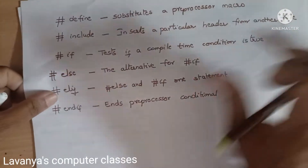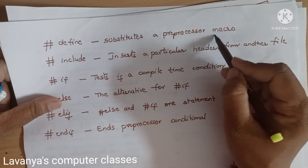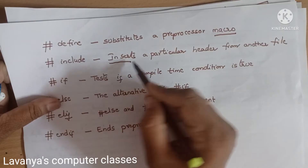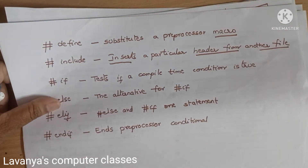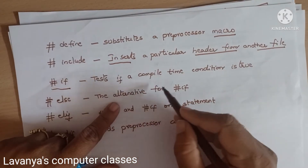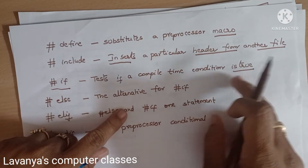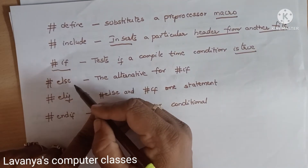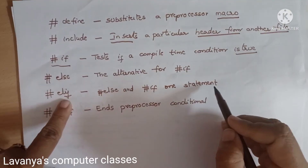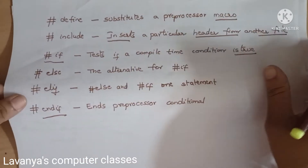There are more pre-processor directives besides hash-include. Hash-define substitutes a preprocessor macro. Hash-include inserts a particular header file from another file. Hash-if tests if a compile-time condition is true. Hash-elif and hash-else provide alternative conditions for hash-if. Hash-endif ends a preprocessor conditional block.